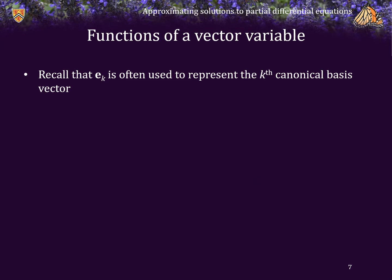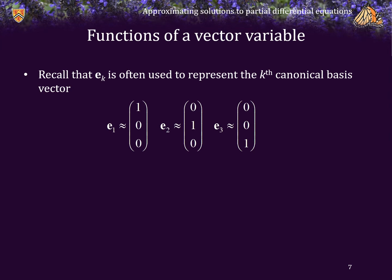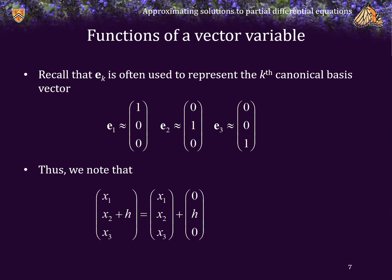You may recall from your linear algebra course that e sub k is often used to represent the kth canonical basis vector. So in R³, e1 is the vector (1, 0, 0), e2 is the vector (0, 1, 0), and e3 is the vector (0, 0, 1). Thus we note that the vector (x1, x2, x3) shifted by h in the second variable is the same as adding the vector (0, h, 0), which equals h times the vector (0, 1, 0), giving us x + h times the second canonical vector.